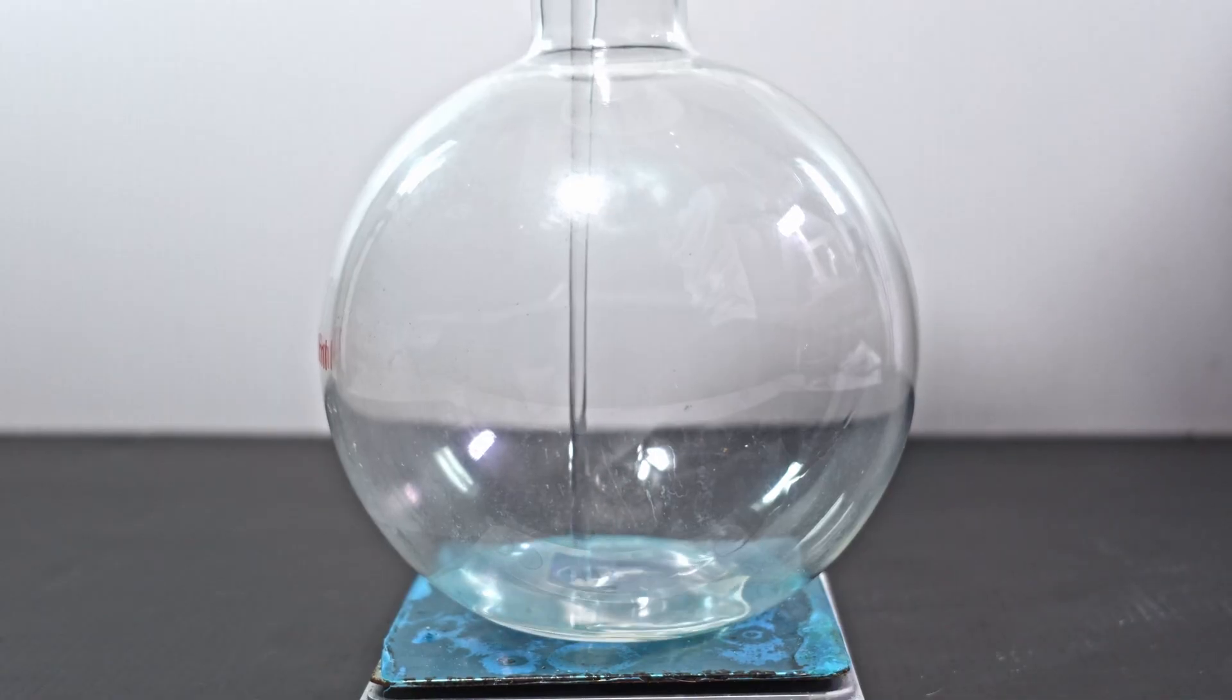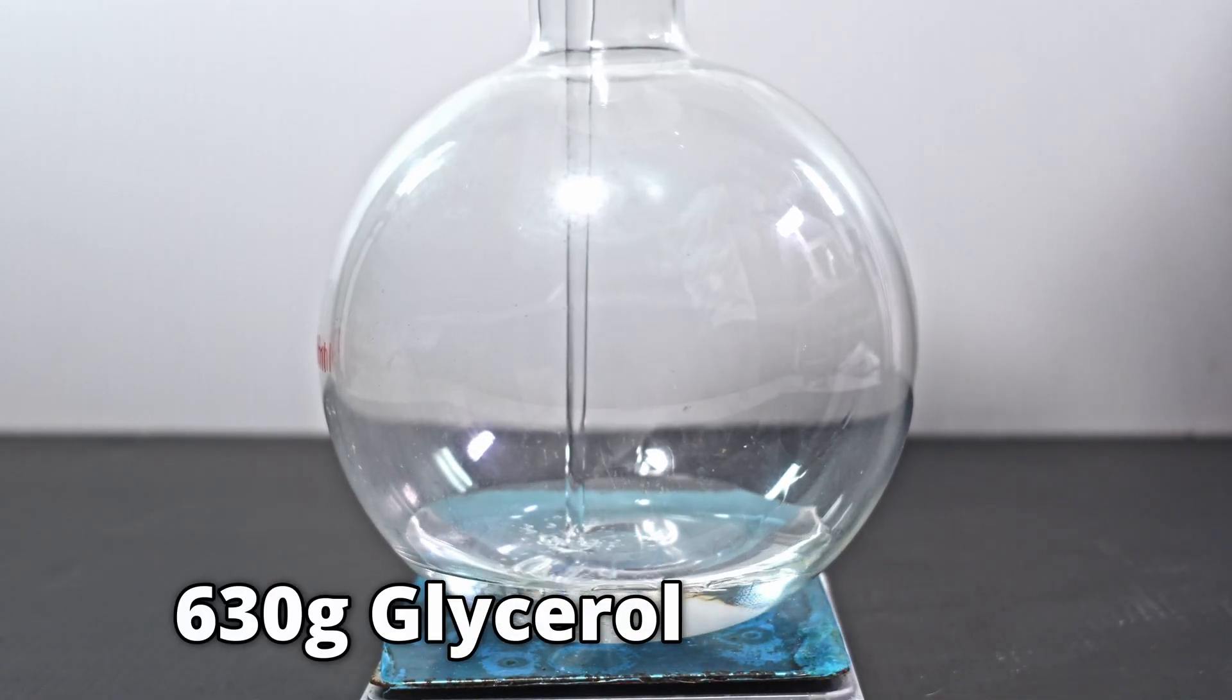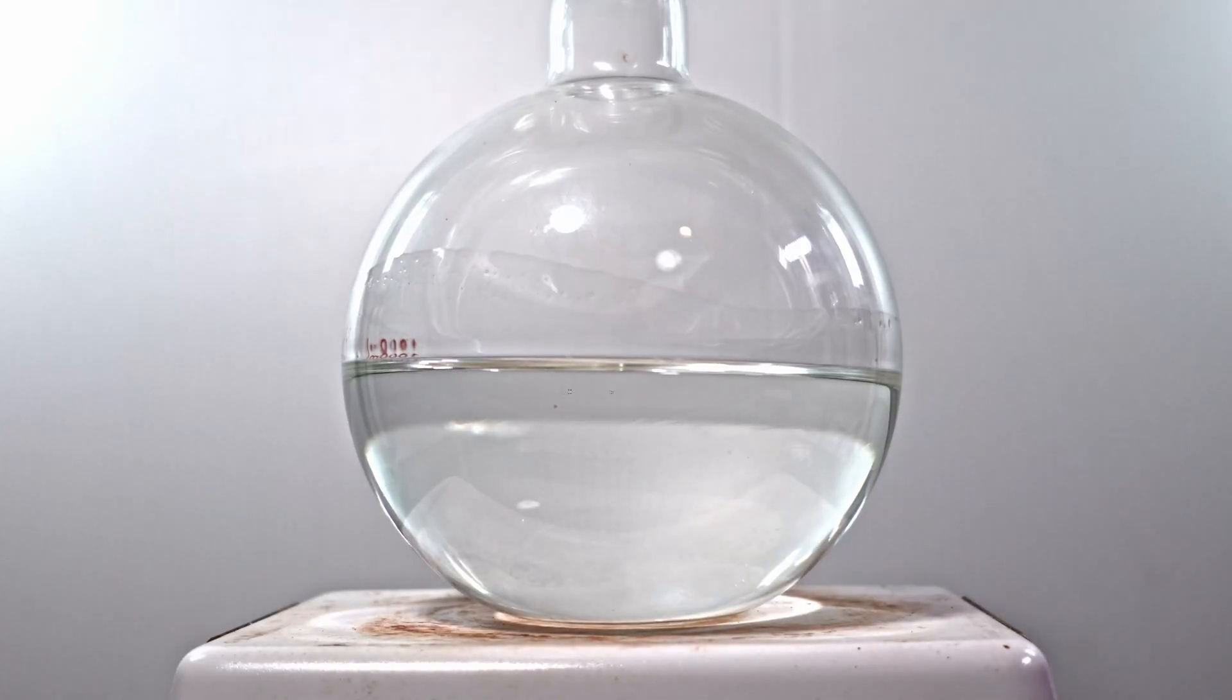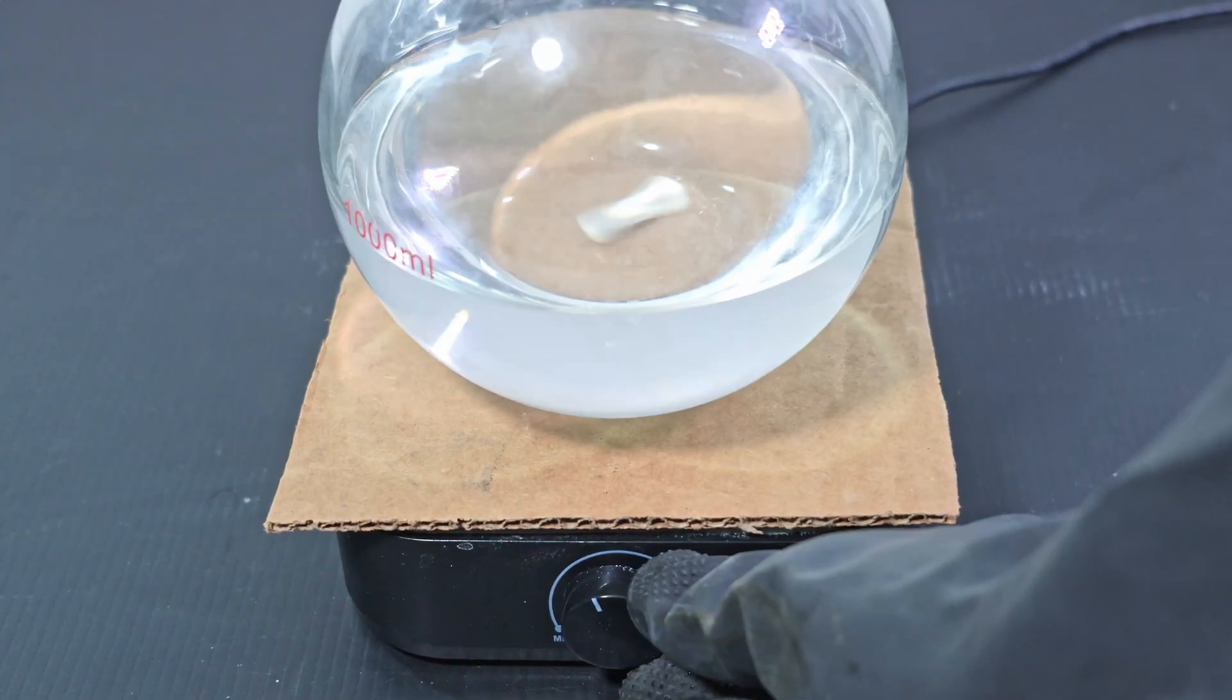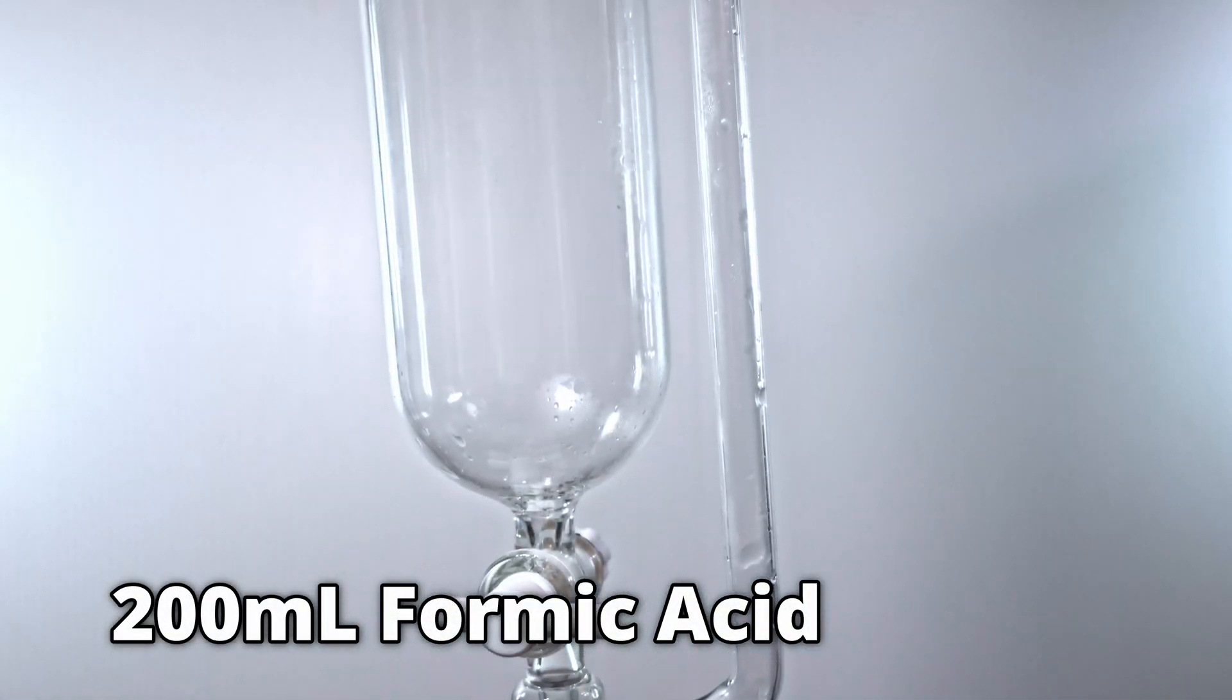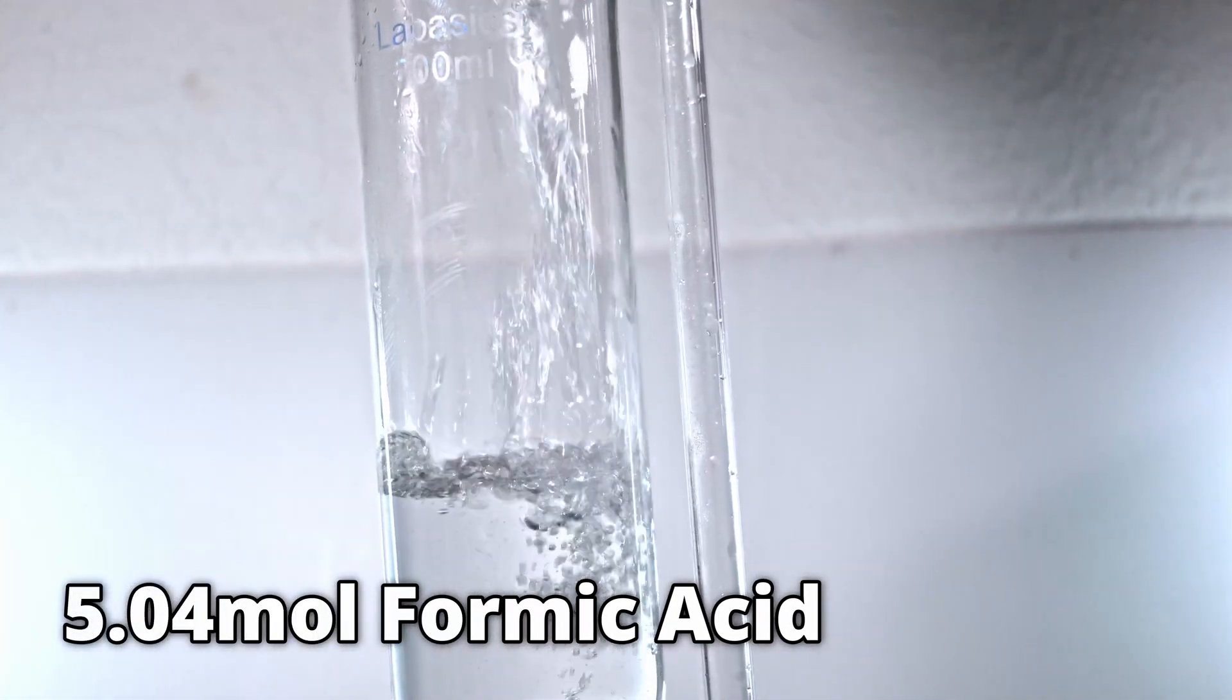I am first going to add 630 grams of glycerol into a 1 liter flat bottom flask. This is roughly 6.85 moles of glycerol. I am going to warm it a bit to get it nice and running. I put it on a stir plate on medium. I attach my addition funnel with 200 milliliters of pre-warmed formic acid. This is approximately 5.04 moles of formic acid.